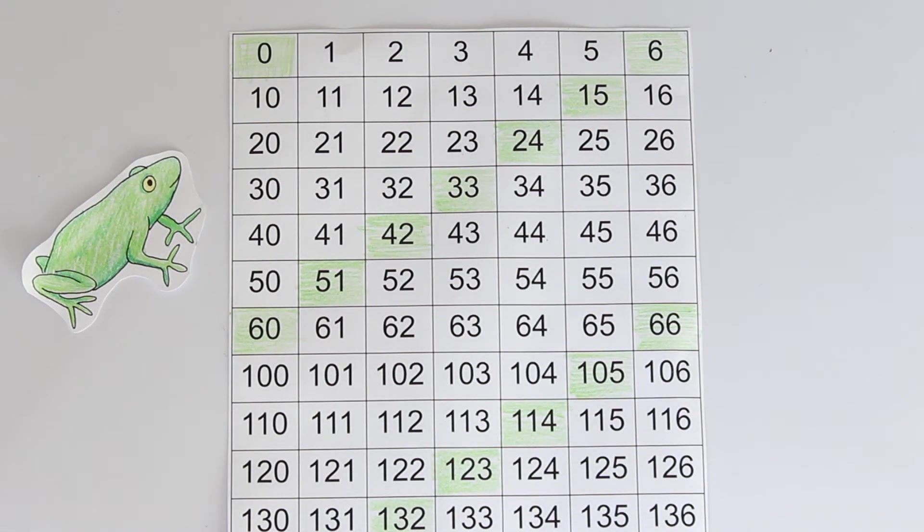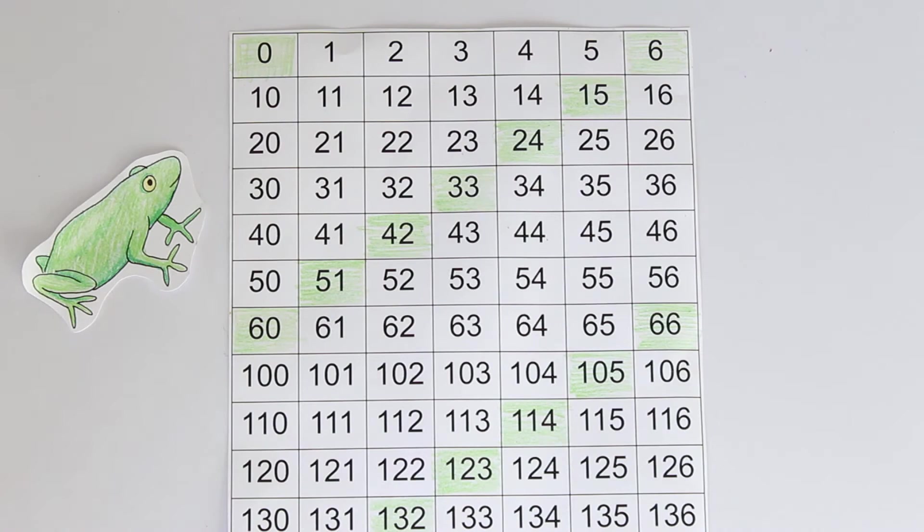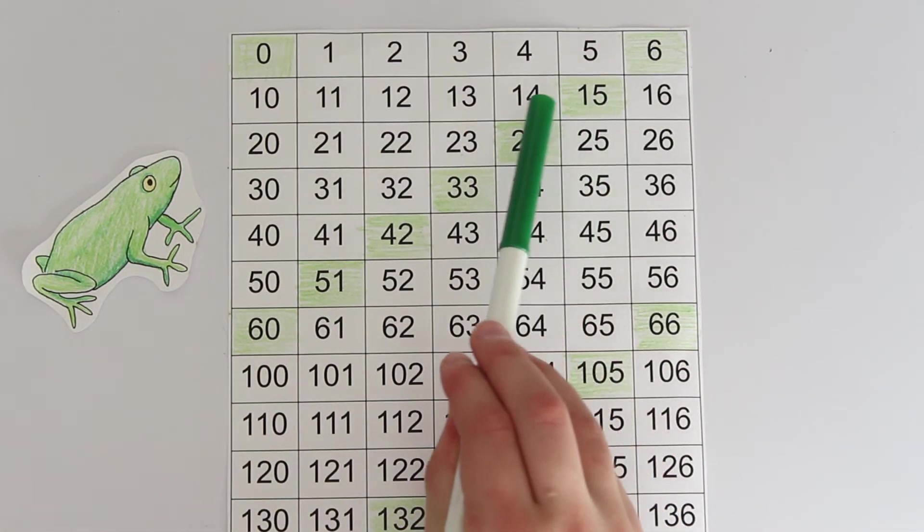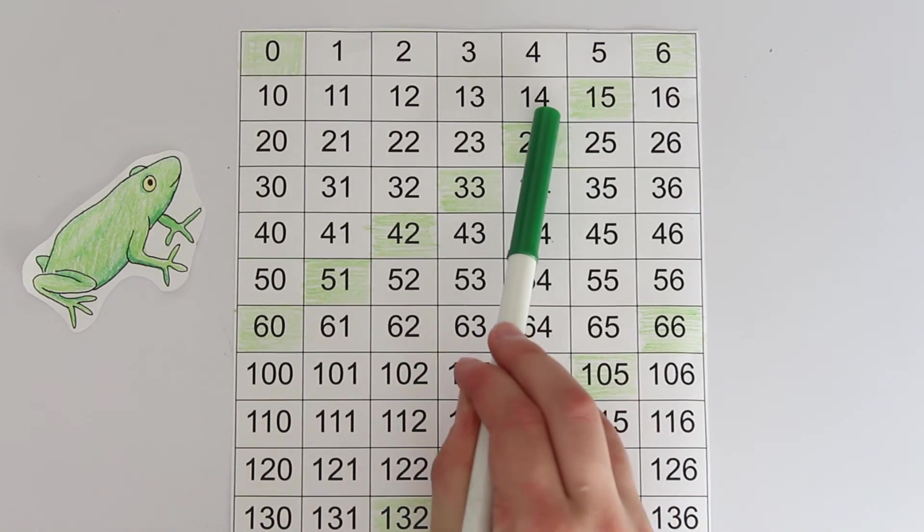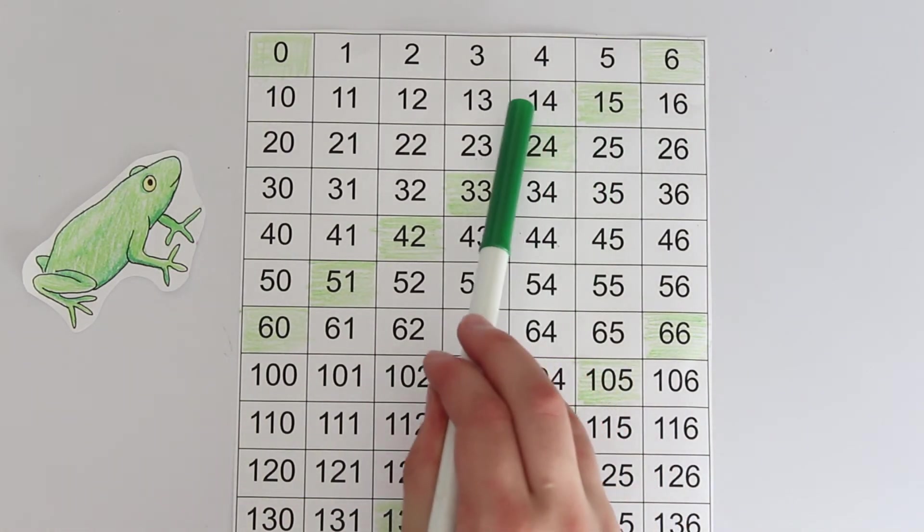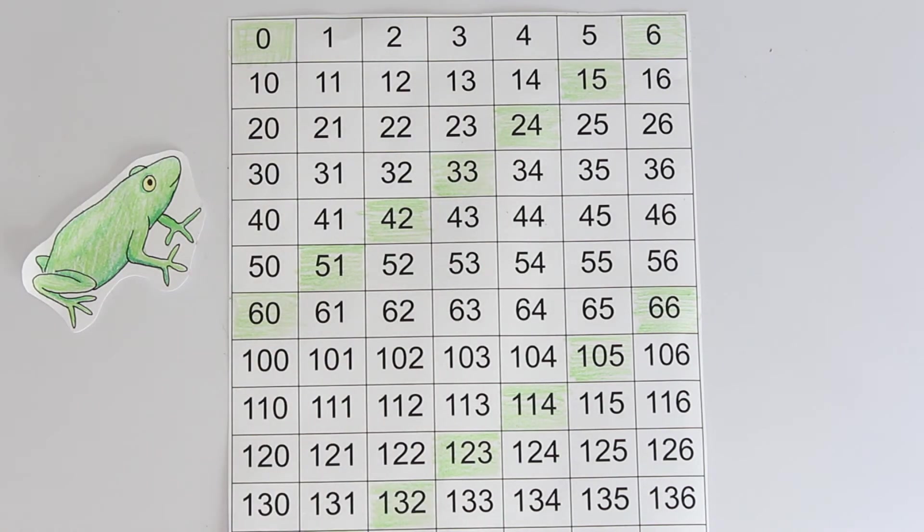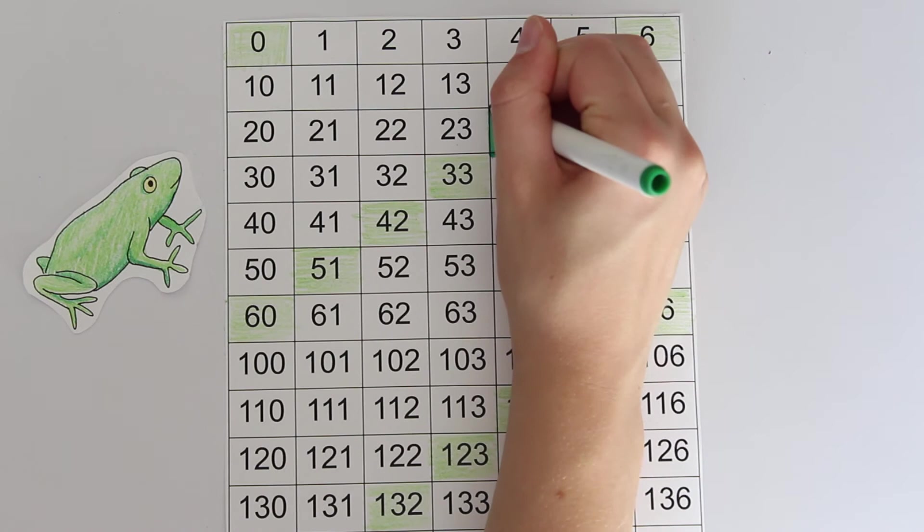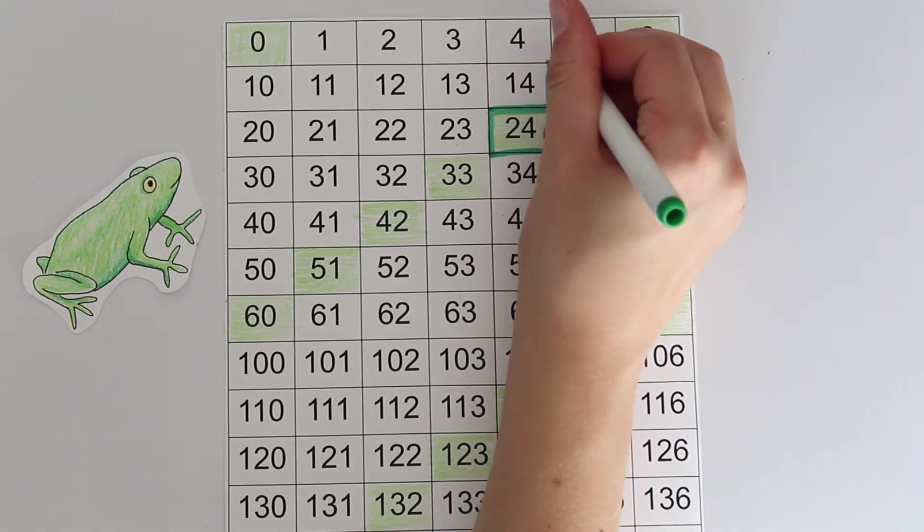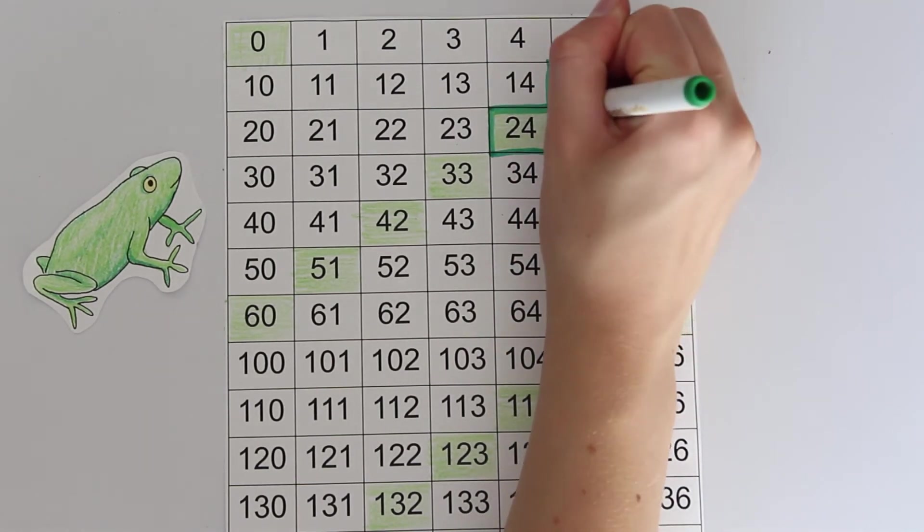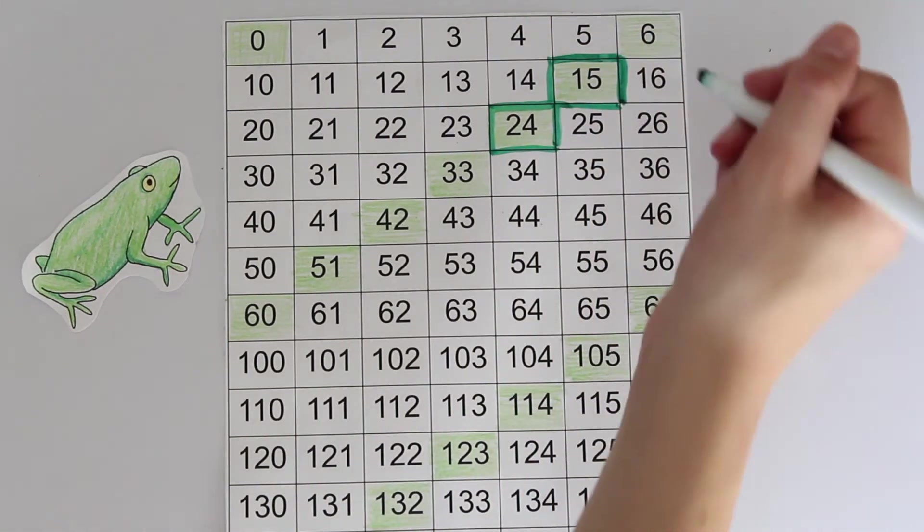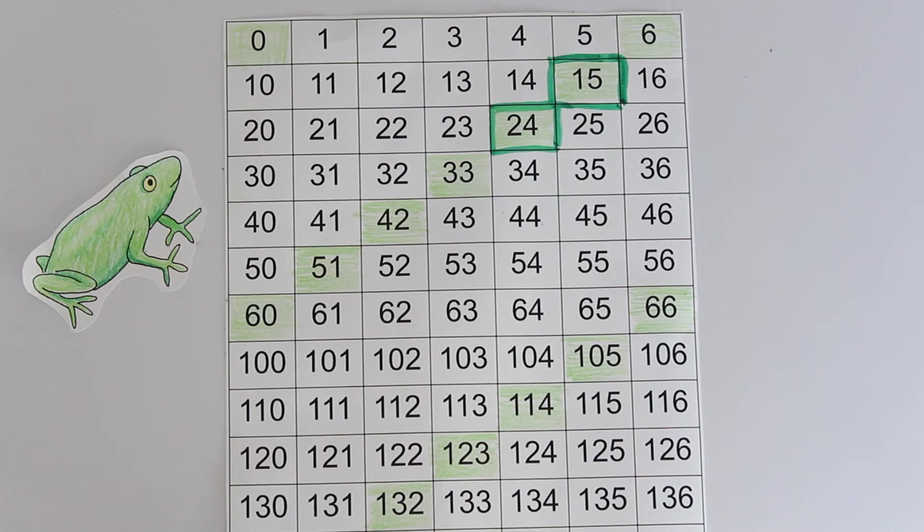Suppose Mr. Frog starts on a diagonal. To move to the next square in the pattern, first he hops one column to the left. This will decrease the ones place by 1. Then he hops one row down. If the second place is not 6, then it will increase by 1. We can see this between squares 1 5 and 2 4. We subtract from the ones place, and add to the second place, so the total sum of the digits does not change.